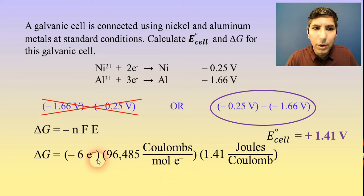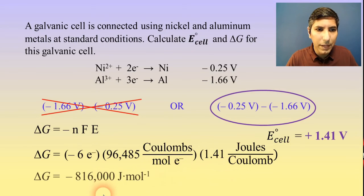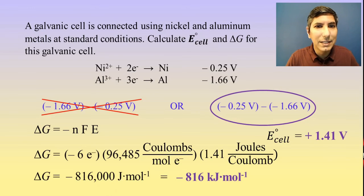The units, when you multiply these numbers together, are going to be joules per mole. So that would be negative 816,000 joules per mole. We normally write these in kilojoules per mole, so that's negative 816 kilojoules per mole.